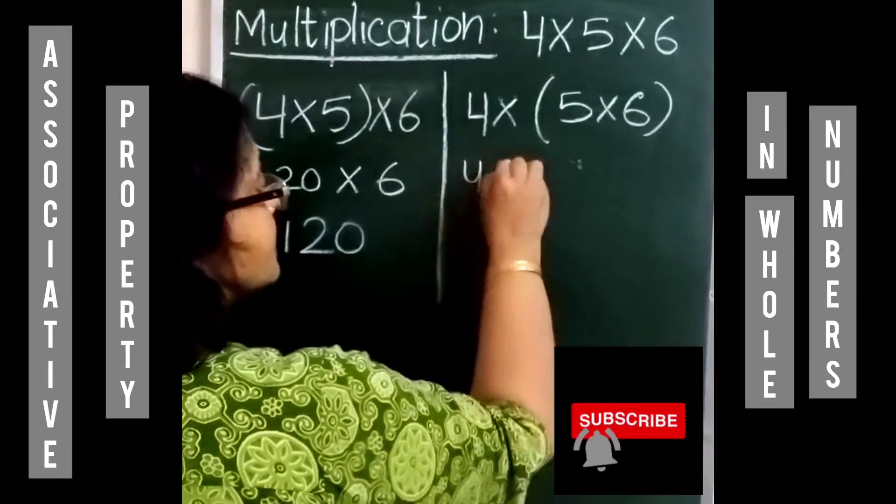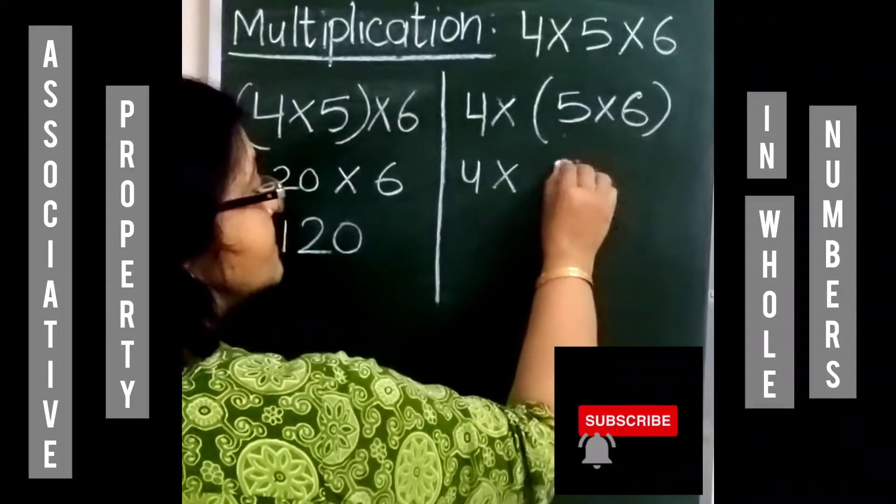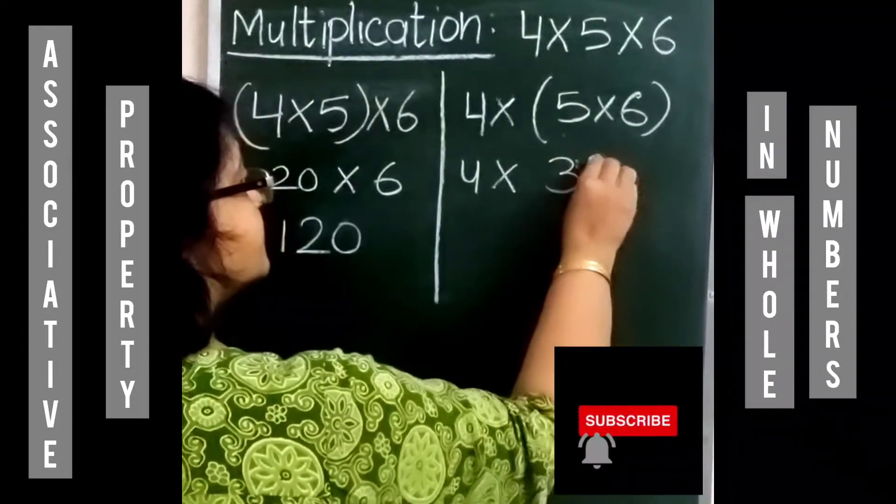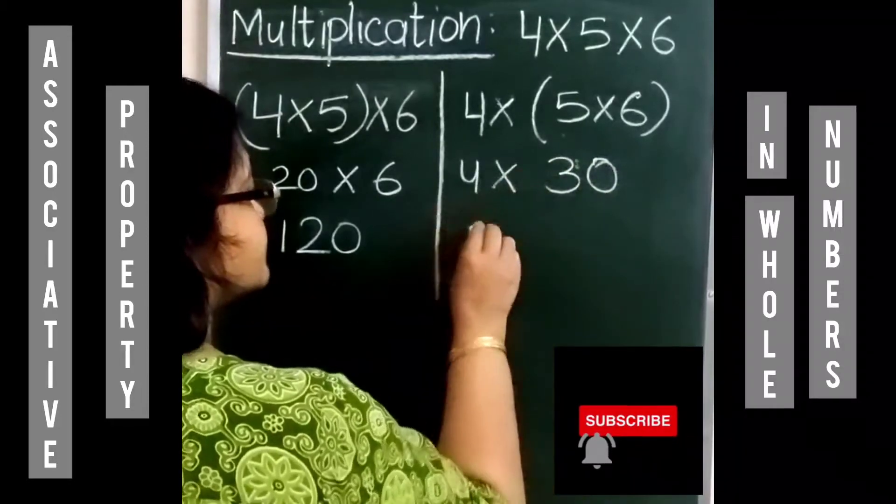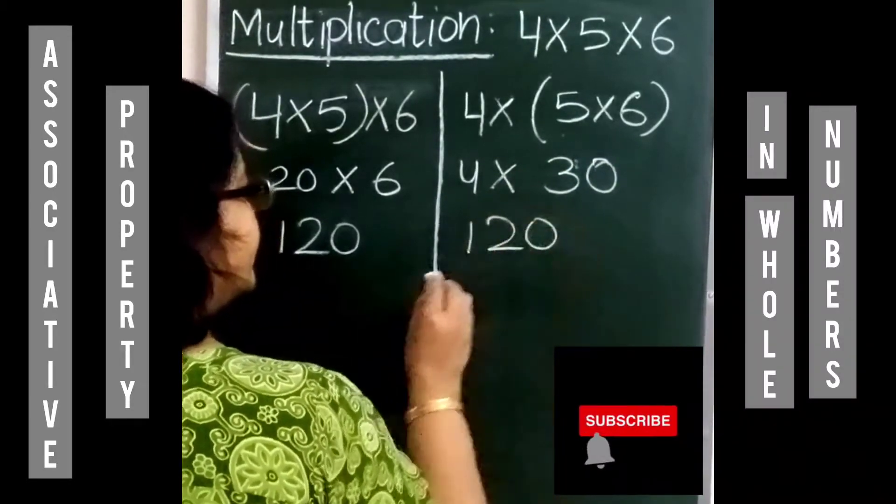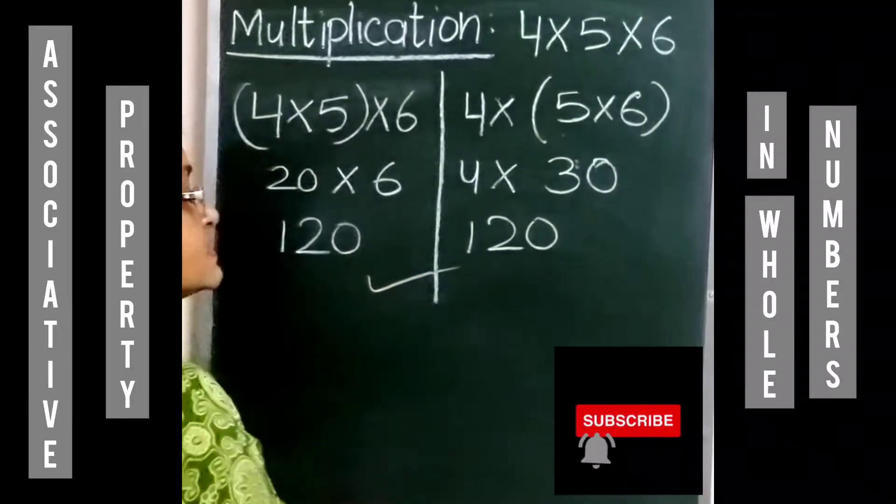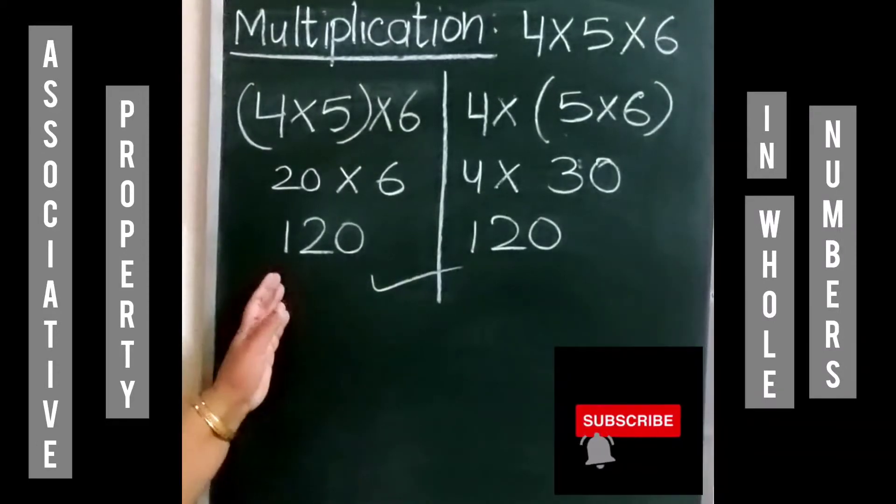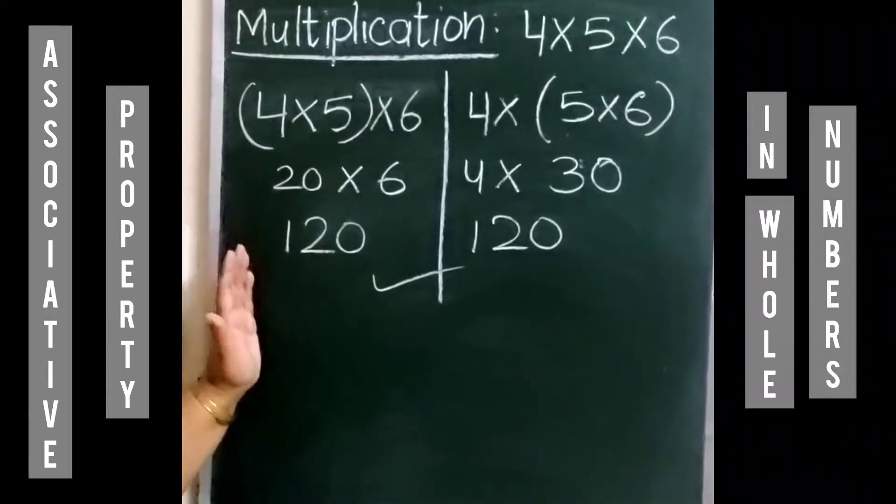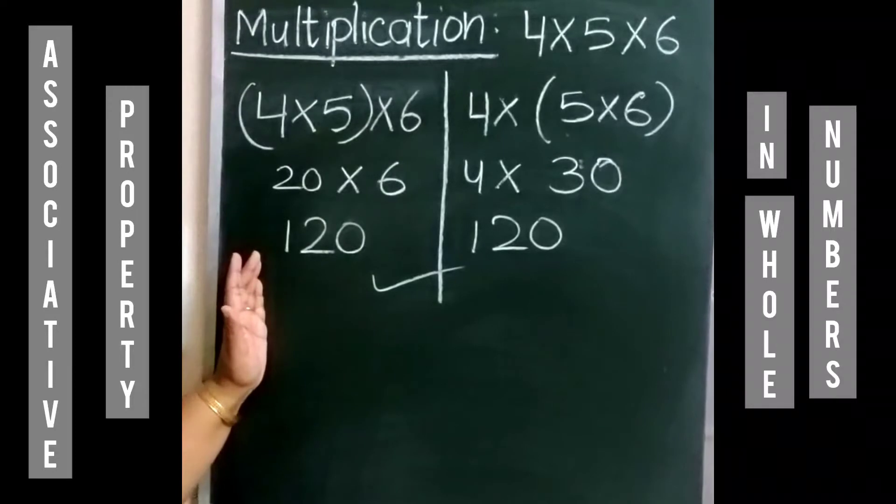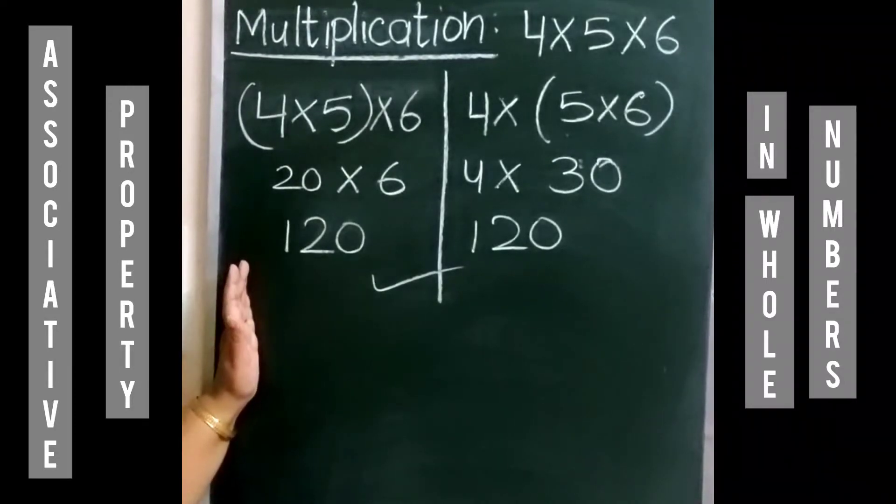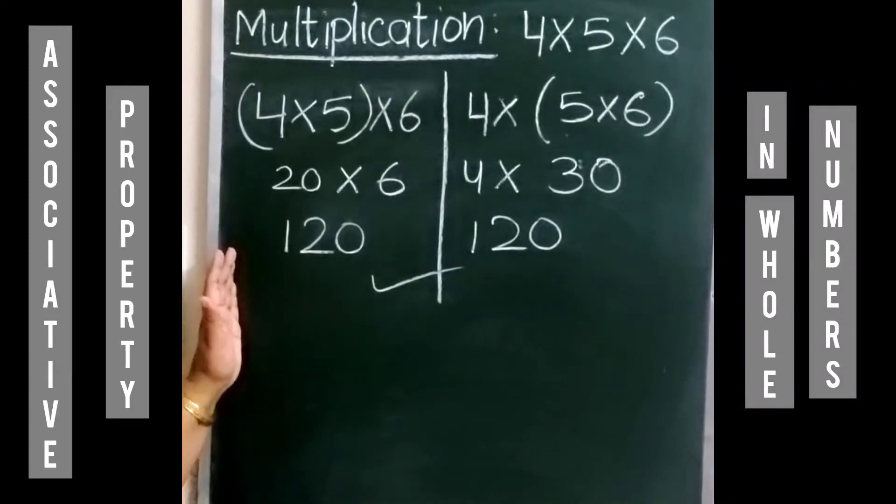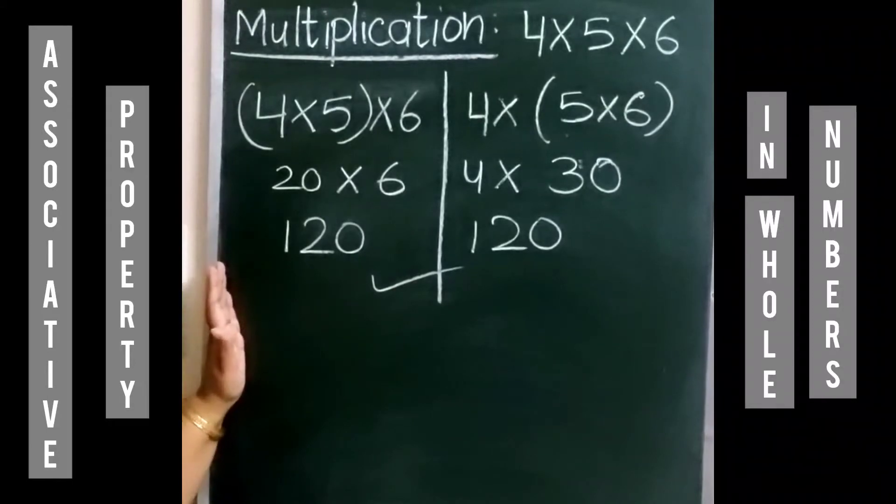Now let's see here: 5 multiplied by 6 is 30, and 30 multiplied by 4 is again 120. In both cases we have got the same result. That means the associative property is true for multiplication also. In the multiplication of whole numbers, the grouping of the numbers does not affect the product.